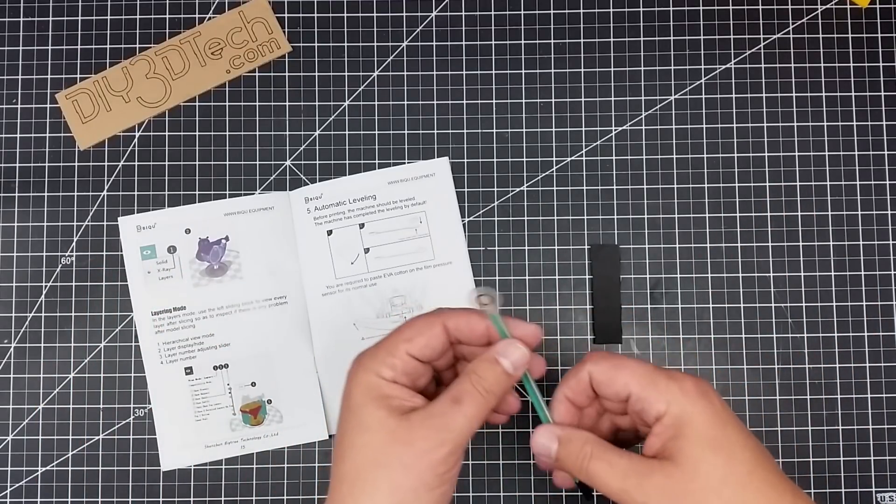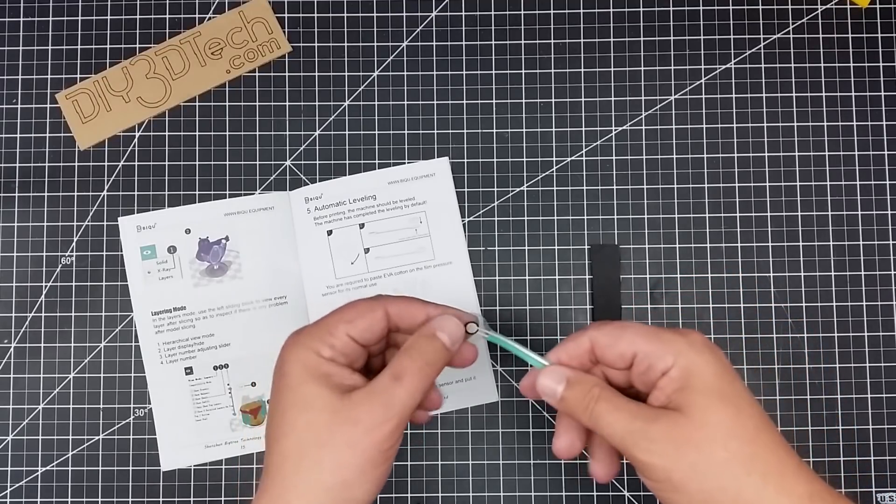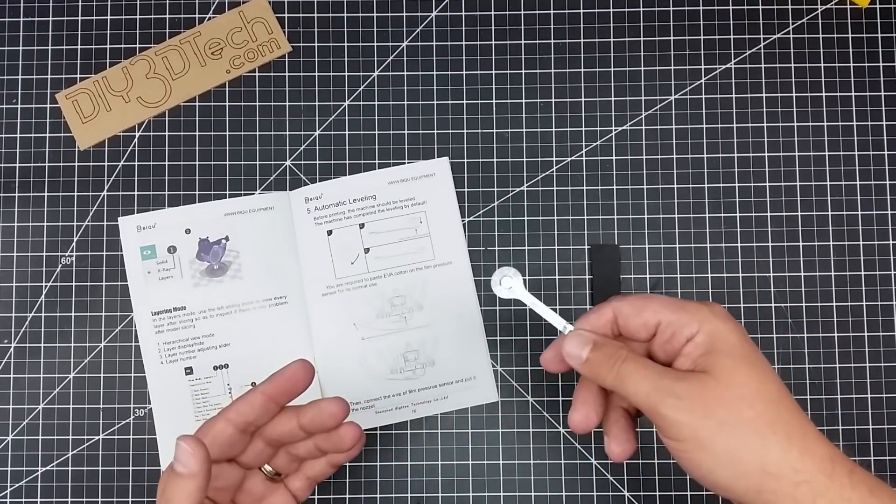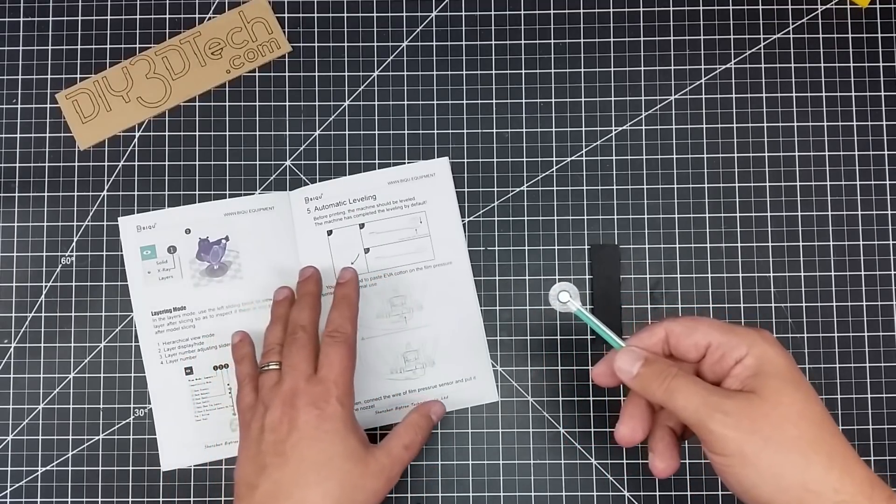So a little bit interesting, it has this strain sensor of sorts that actually mounts to the hot end and goes down and touches the bed. But how do you set this up? So we got a little bit of instructions here.